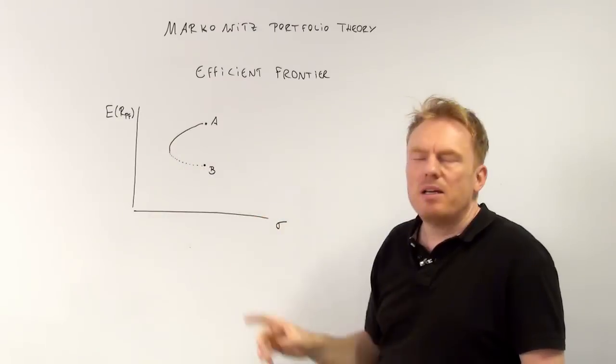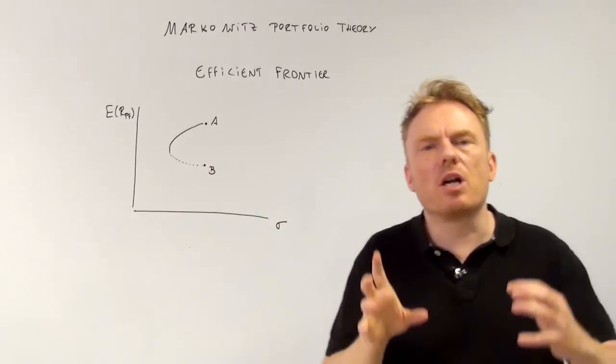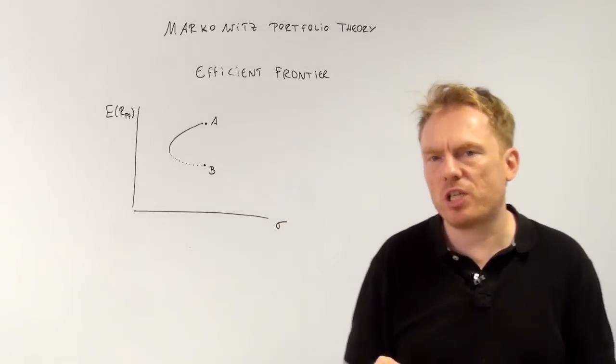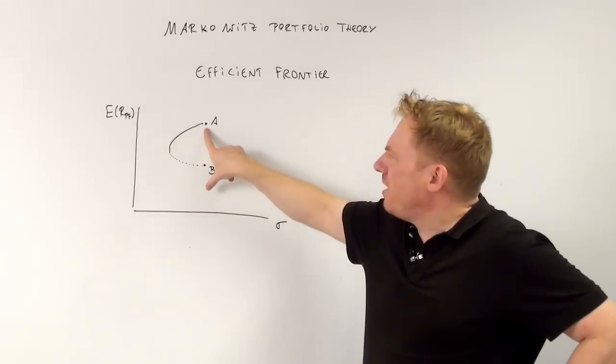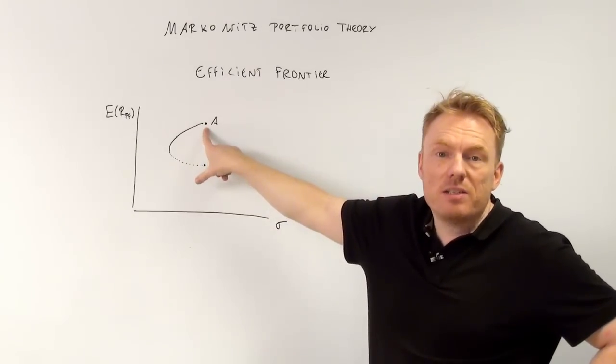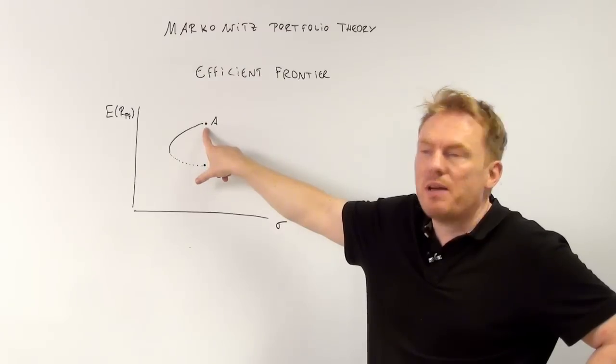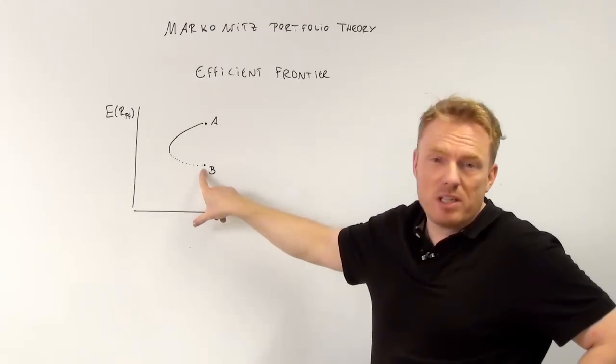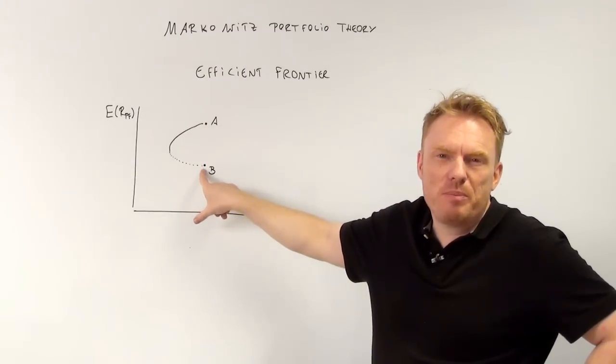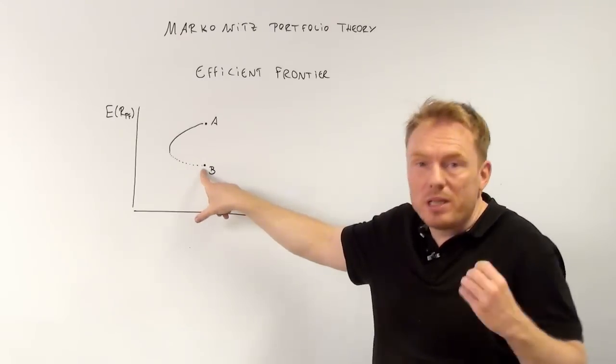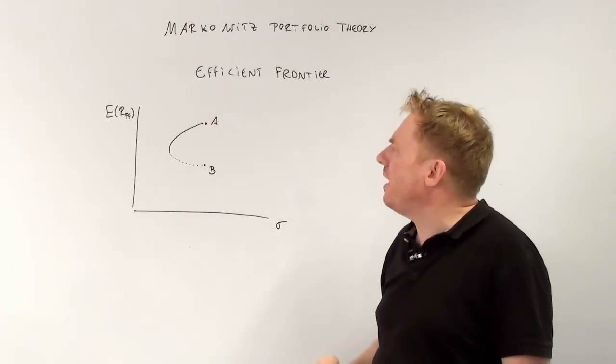We get this line if we look at every single combination of share A and share B. Like take 100% of share A and 0% of share B, we have this. 0% of share A and 100% of share B will lead to this, and so on.